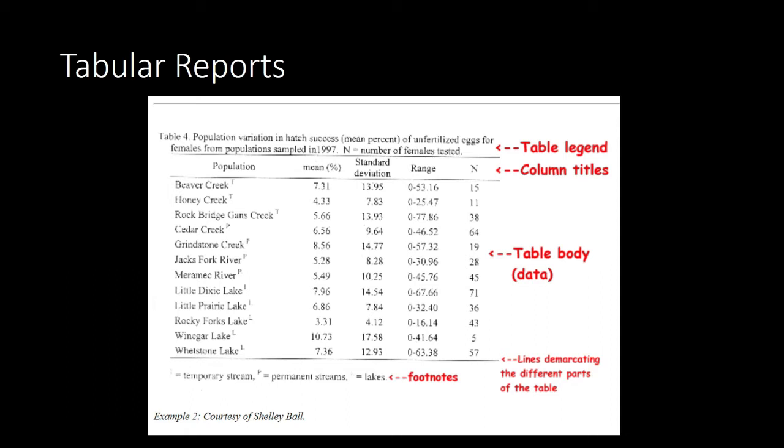Because they are investigating here the eggs that was spawned by some kind of insects. So it says here population. These are creeks. So these are where the population of insects came from. So the first column is telling you the type of data here is where the insects were gathered. The next column is about the mean. This is like the quantity in percent of unfertilized eggs. The standard deviation, the range, and the size of the sample. You will hear that often in stats, size of the sample.